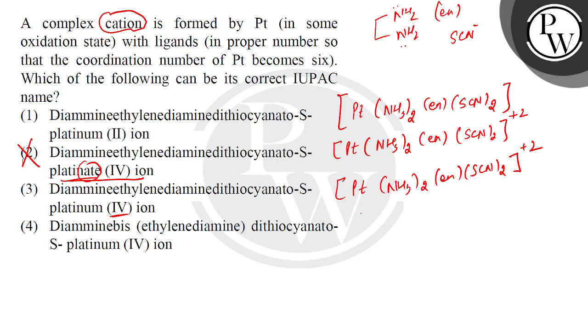In the fourth option, we have written Diamine-bis-ethylene-diamine-dithiocyanato. Now platinum. Diamine means NH3 twice. What does bis mean? How many times does ethylene diamine appear? Two times. That means this is EN2. Then what will happen? Dithiocyanato-S, SCN2. Now how much is the coordination number?